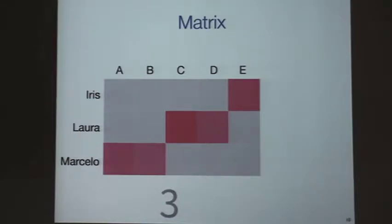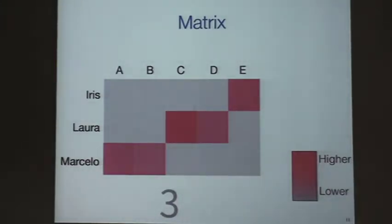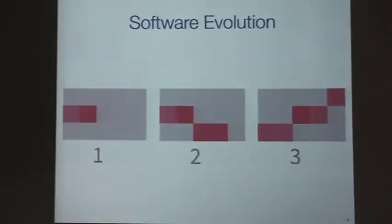A matrix represents the relationship between two groups of elements at a specific time. For the previous slide, we have at the rows the developers, at the columns the classes, and at the bottom the time. Each cell of the matrix represents a relationship between a developer and a class. The color of these cells has a meaning — the color represents the weight. If the color of the cell is gray, it means there is no relationship. If the color goes to pink or higher, it means the contribution is stronger. If a matrix represents a specific time, the evolution and change could be shown as a sequence of matrices.